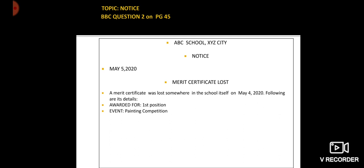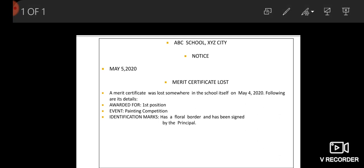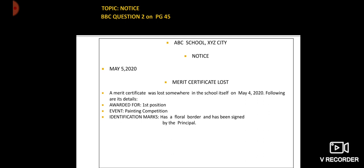Next, the event for which the merit certificate was awarded: a painting competition. This is given in the question, so we cannot change it — we have to write 'painting competition.' Next, identification marks: it has a floral border and has been signed by the principal. These three details — awarded for, event, and identification marks — are more than enough.